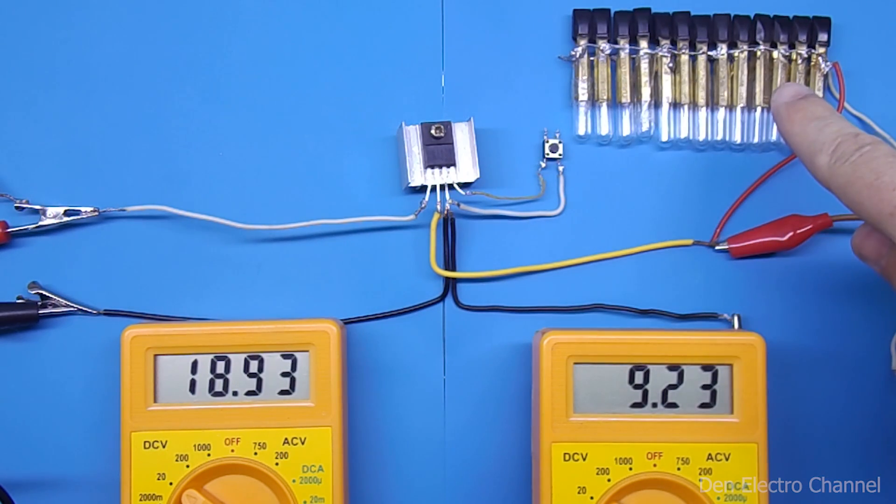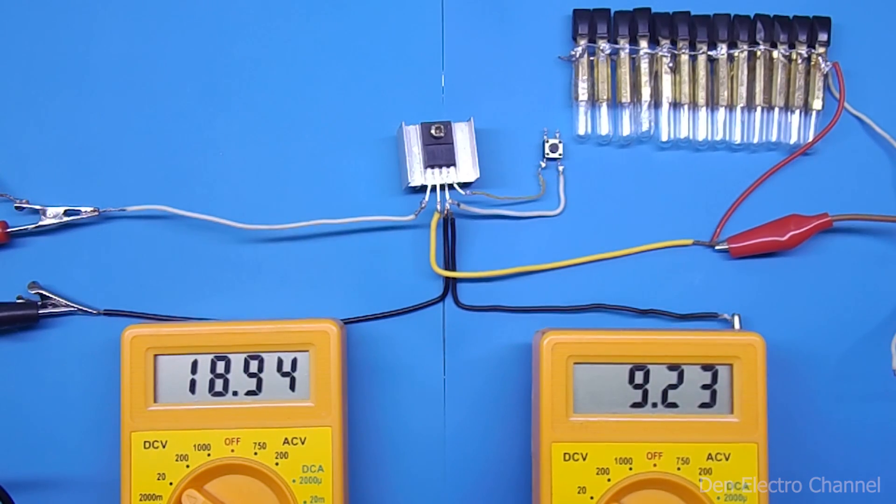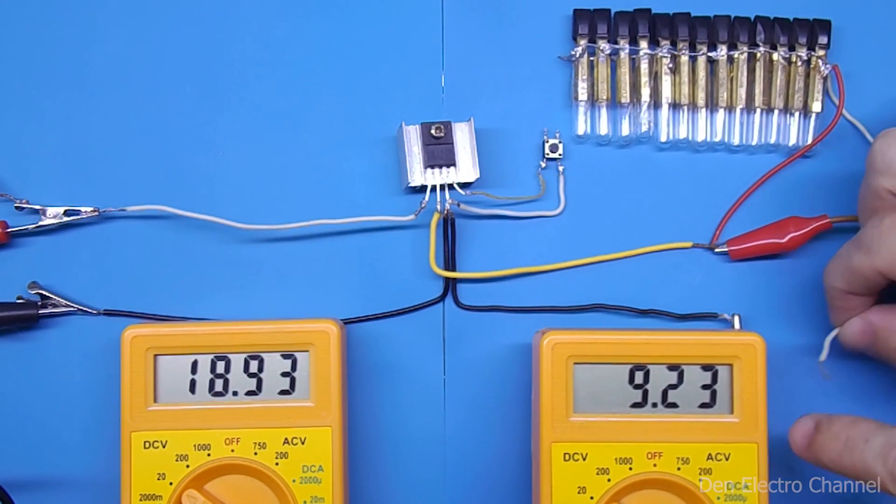The circuit works in exactly the same way if any load is connected. Now I have connected several lamps soldered in parallel. Their total current consumption is approximately 1 ampere.